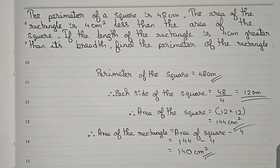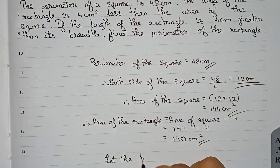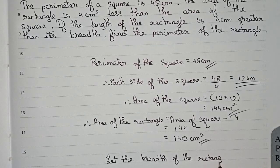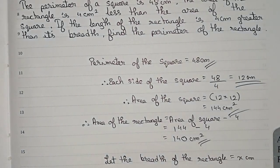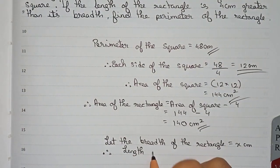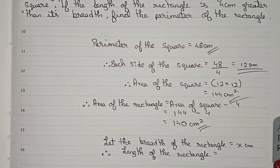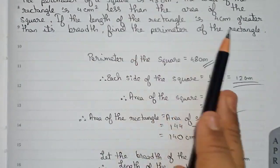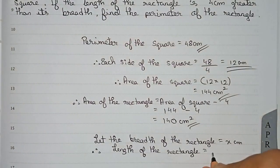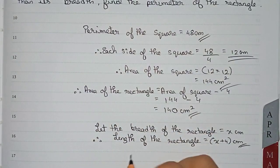Now we let the breadth of the rectangle be equal to x centimeters. Therefore the length of the rectangle will be equal to x plus 4, as mentioned in the equation — the length of the rectangle is 4 centimeters greater than its breadth. So if breadth is x centimeters, length will be x plus 4 centimeters. The area of a rectangle is length into breadth.